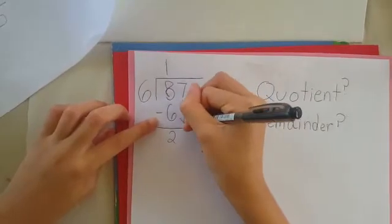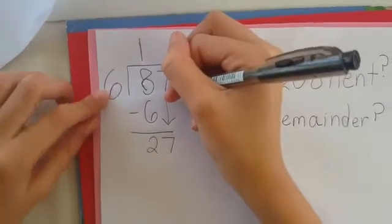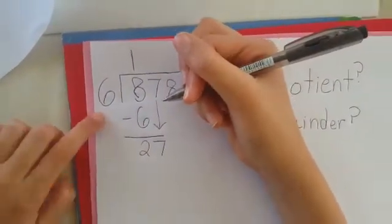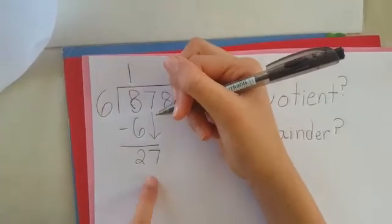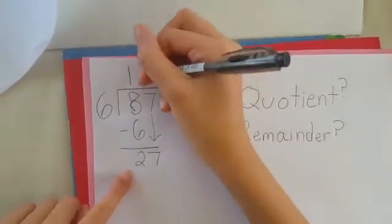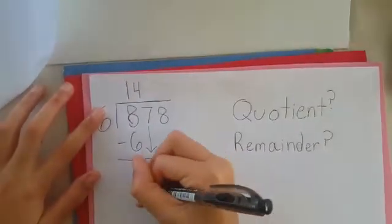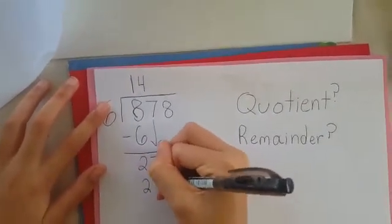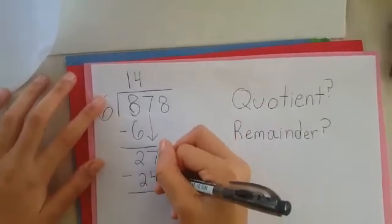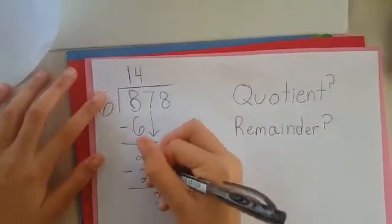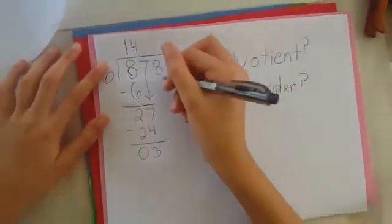So we break down the seven and it would be 27. So then what we do is we need to find a number multiplied by six that is close to 27. That would be four and it would be 24. So we have to subtract it. Seven minus four is three. Two minus two is zero. The zero is optional. We don't really have to write it.